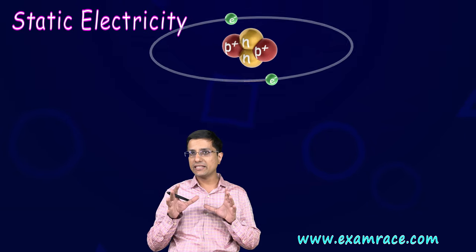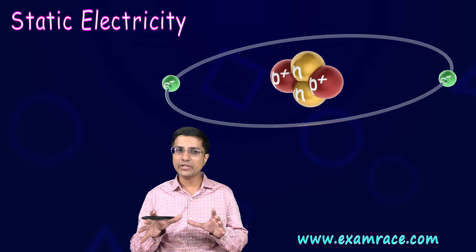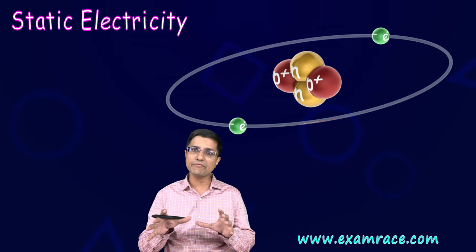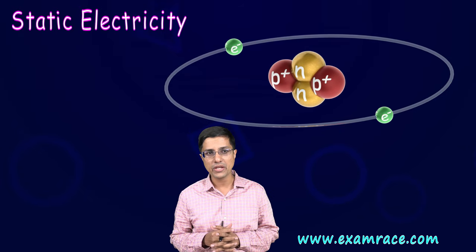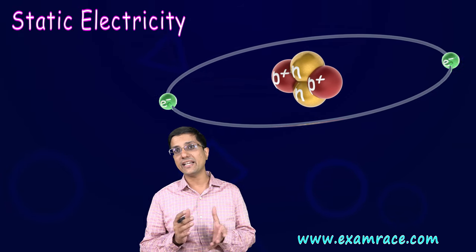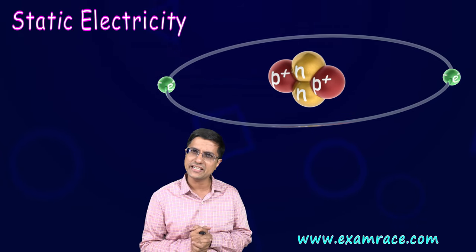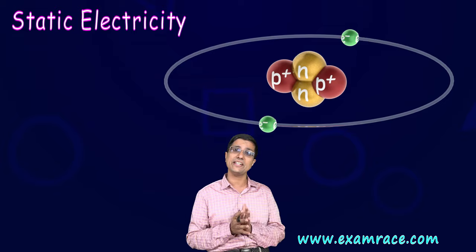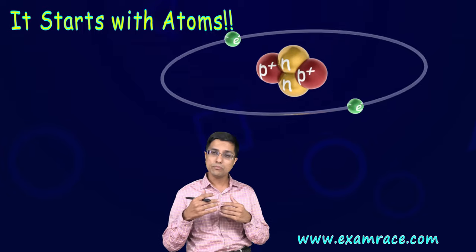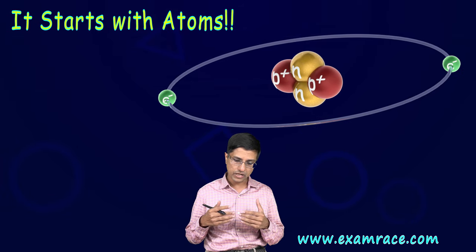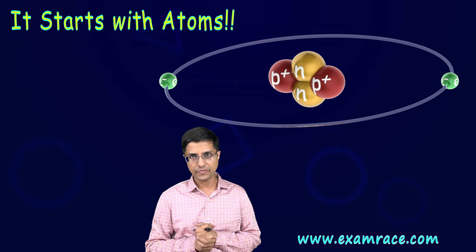The most fundamental aspect of electricity — the things which actually started all of this — was static electricity. What is static electricity? It is electricity which is not really moving. Let's understand how it is produced, how it is made.